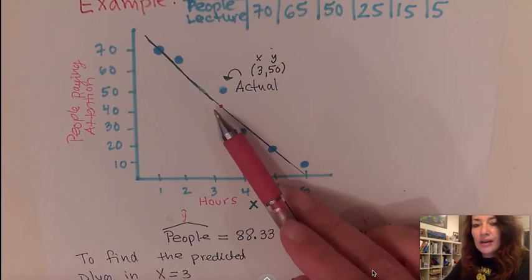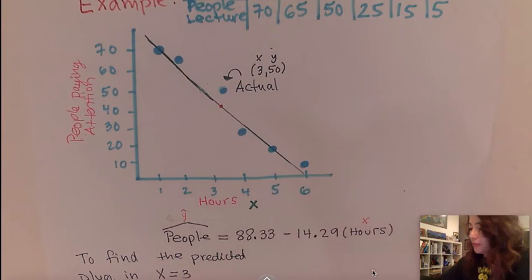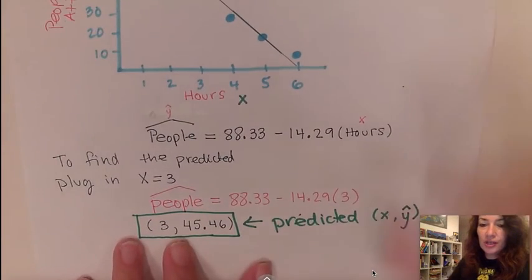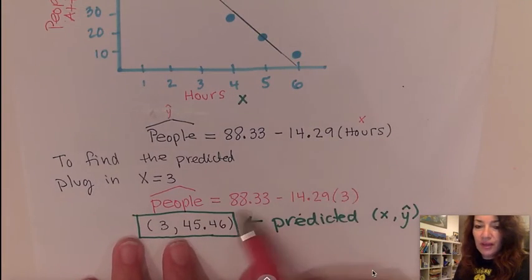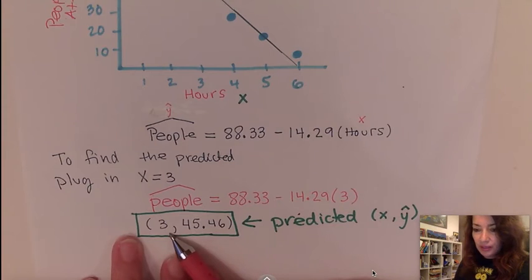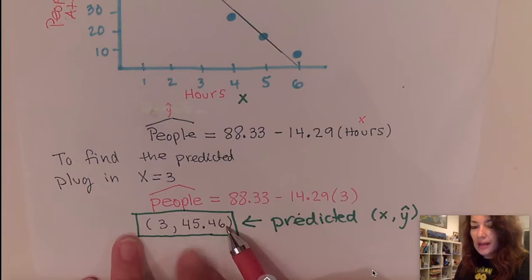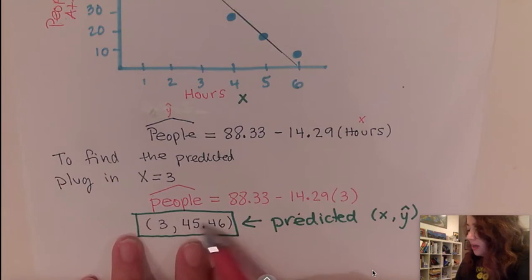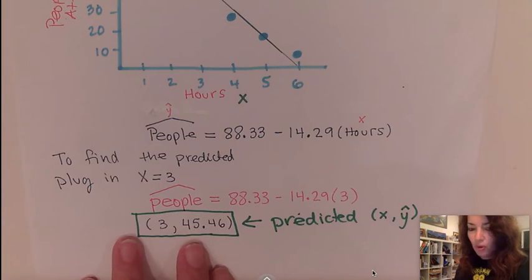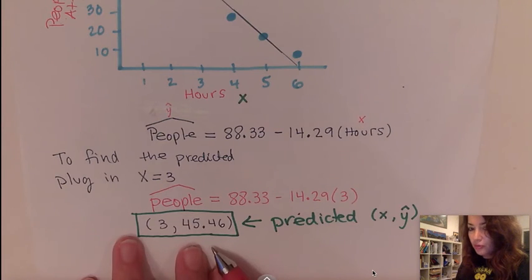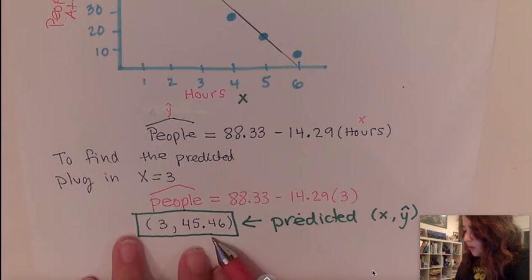Okay. And so I already know that at three, there's 50 people. But if I predicted it, I can go ahead and plug in three into the equation. And when you simplify it, you get that it is predicted that when it's three hours, there will be 45.46 people. Now, obviously we know that there's no such thing as 45.46 people. But what we're talking about here is an average. So when we have an average, we can use a decimal. So what would the residual be?